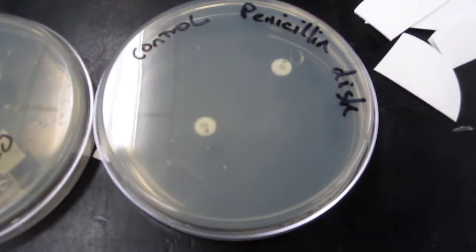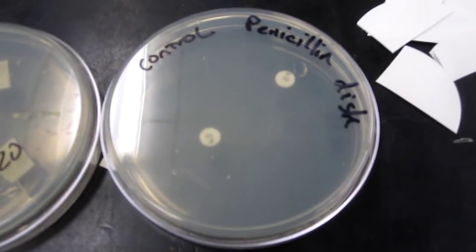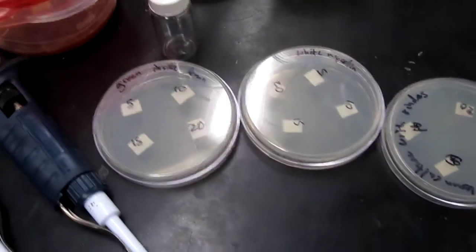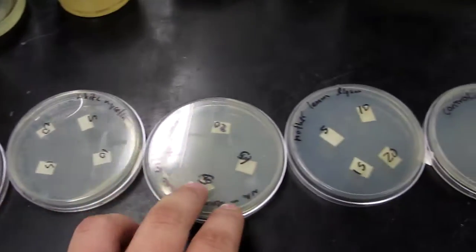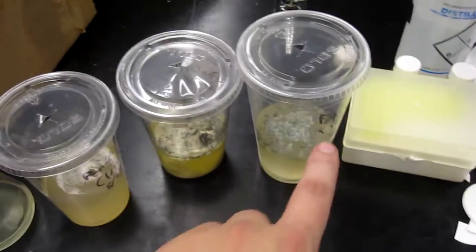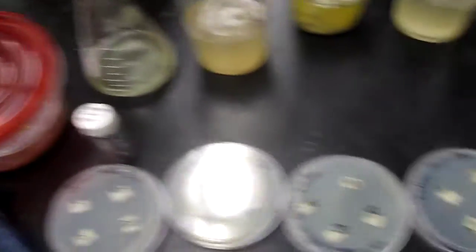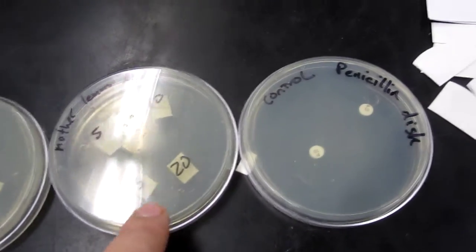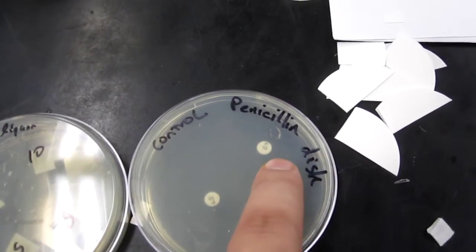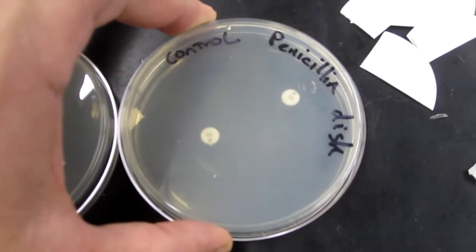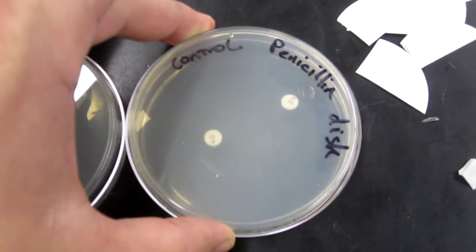All these plates are plated with Bacillus subtilis, a gram-positive bacteria that responds to penicillin, so we'll see if any of these three experimental dishes, one of each of these cultures, and one of this mother liquor, will have any comparable rings of inhibition to these 10-unit official penicillin filter papers, which is the control.